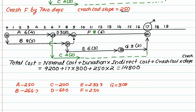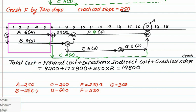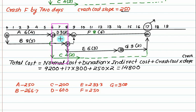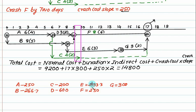Now we go through the remaining brackets. From day 17 onward, we would need to concurrently crash A and B, and the total cost exceeds 300, so it is not economical and we cancel it. In the next bracket, D plus B plus C also exceeds 300, so that is not an economical solution. In the next bracket, F plus E plus C also exceeds 300, so no economical solution is possible there either.